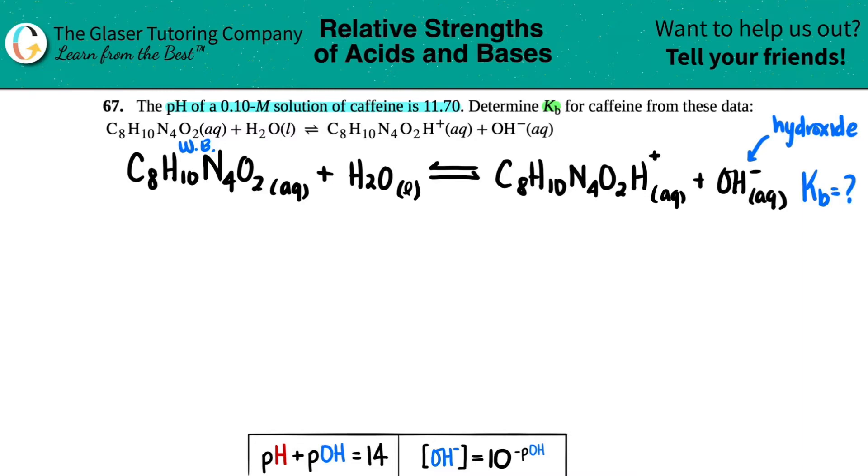So they told us that we had a pH value of 11.70. And they told us that we started off with a 0.10 molarity solution of caffeine. This is assuming that it did not dissociate into its ions.